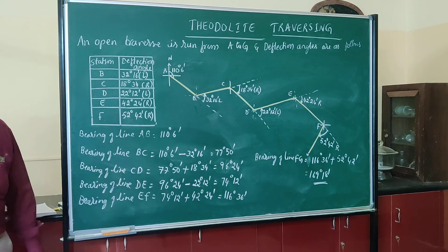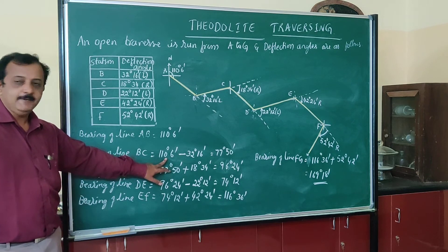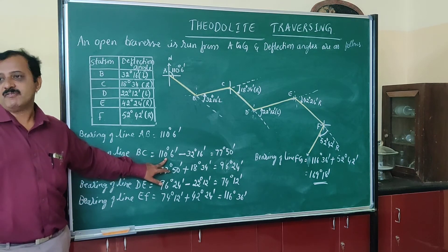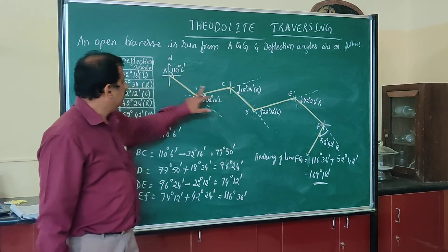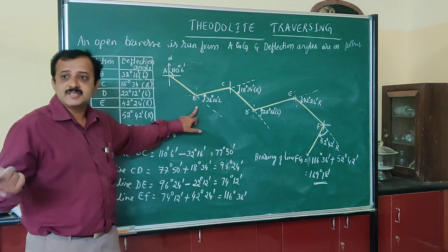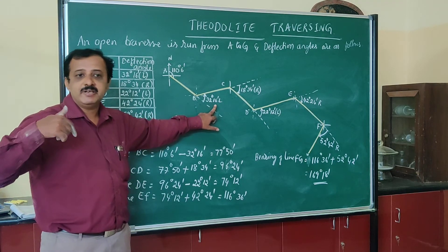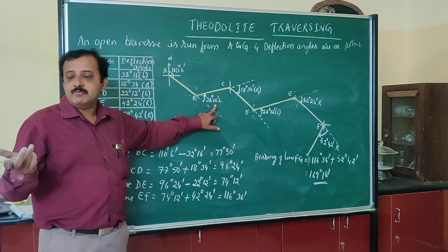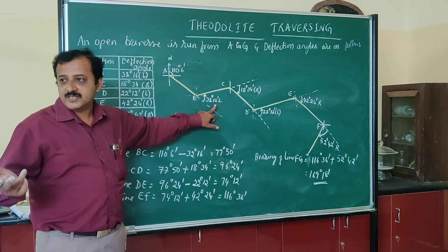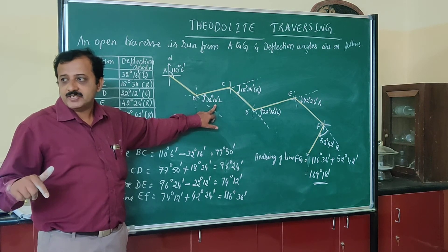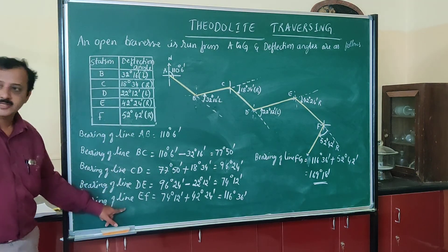To summarize: bearing of the next line equals bearing of the previous line plus or minus the deflection angle at that particular point. When the deflection angle is to the right, you add it. When the deflection angle is to the left, you subtract it. This is how we find the bearing of all the other lines.